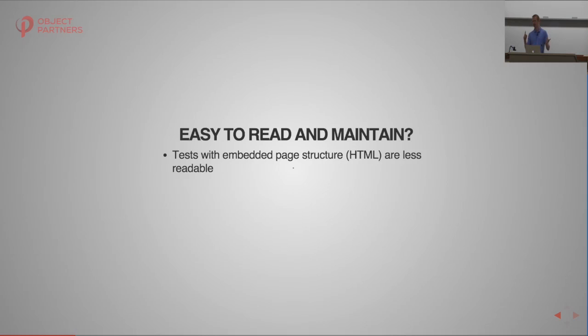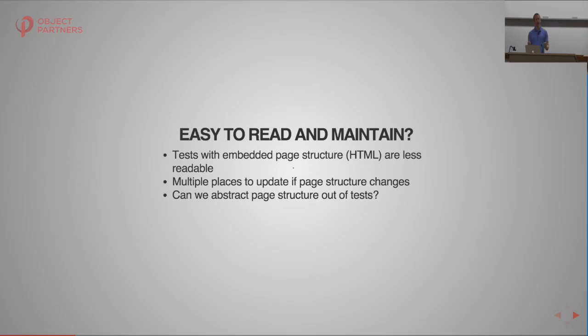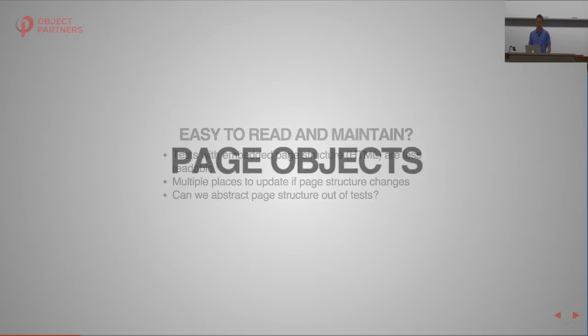That first test has a lot of HTML-specific stuff — attributes, IDs, classes — and I had to explain line by line what each line was doing. It's not very readable. Also, if I have multiple tests using the Google homepage and Google changes the page structure, I have to update multiple places. I want to abstract that page-specific stuff out of my tests and put it somewhere I can reuse it — and the answer is page objects.